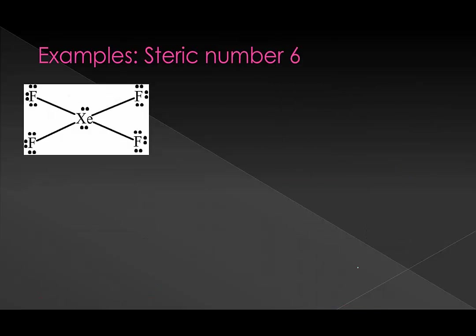Now let's do examples with higher steric numbers, starting with steric number six. We have four bonds plus two lone pairs to give us a steric number of six. We need our orbitals to add up to six: we have an s, and if we use three p orbitals we're still only at four. We need two more, so this must be sp3d2. We use up all of our p's and still need two more, so we get d2.